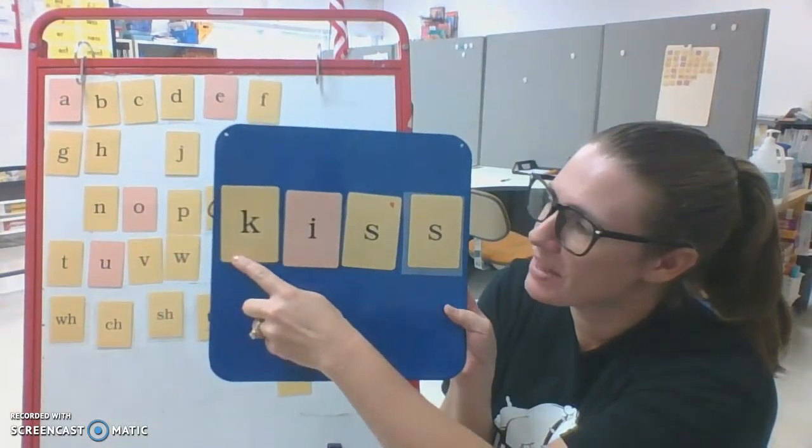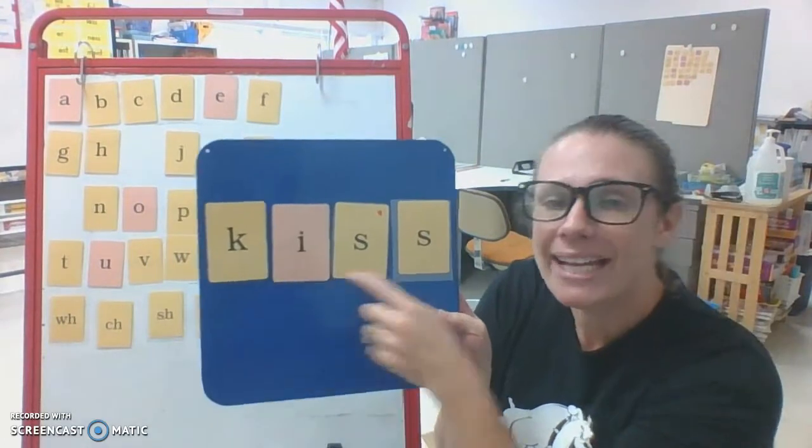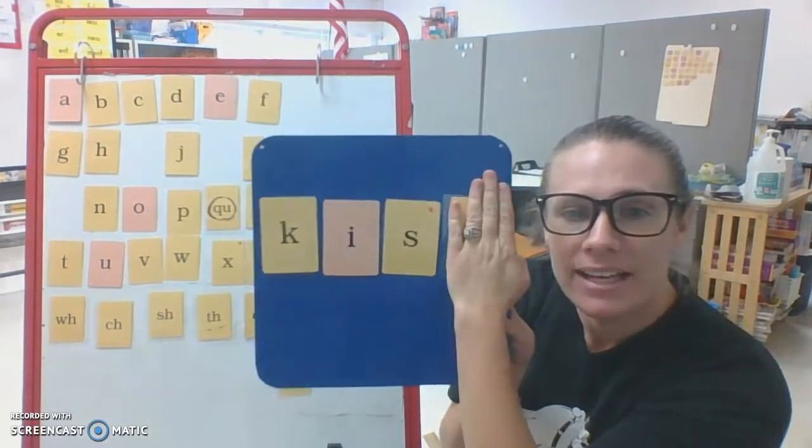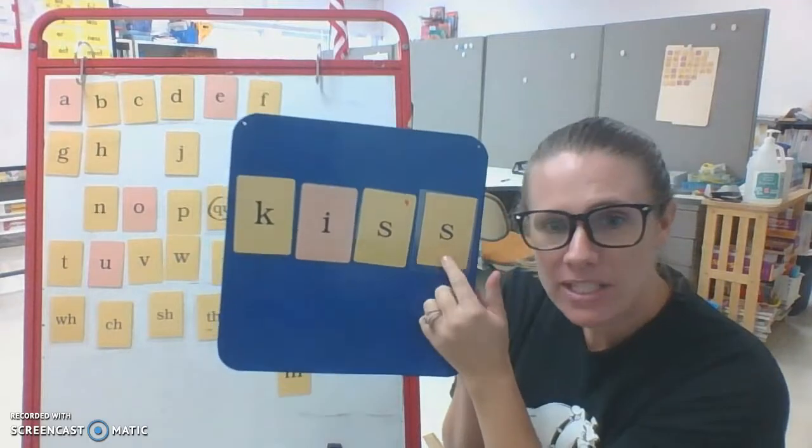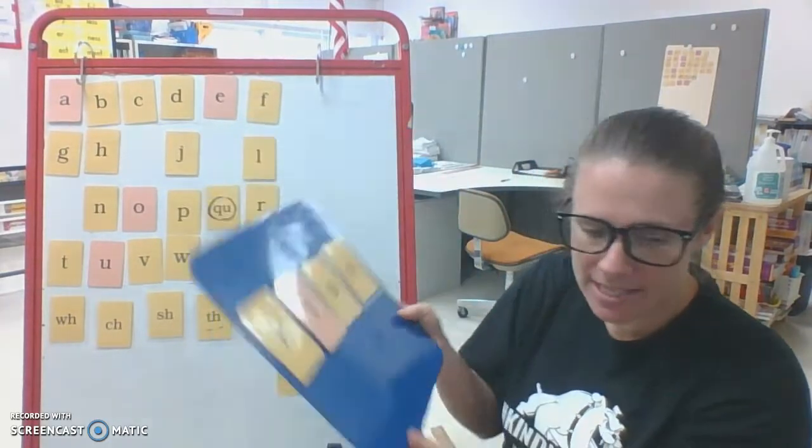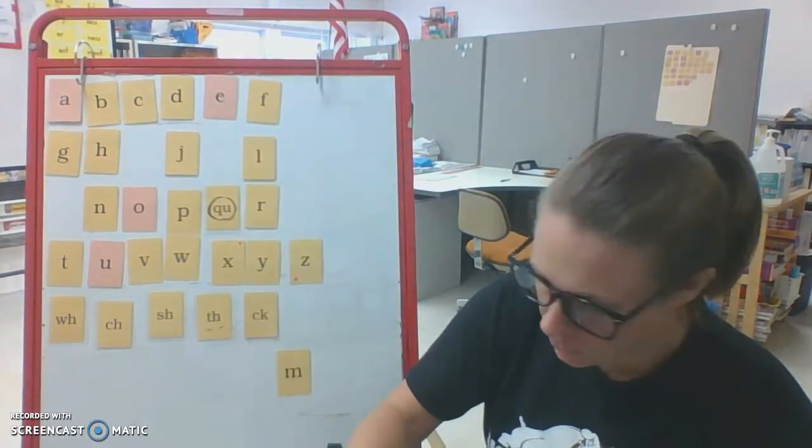What's this word say? C, I, S, kiss. Yeah. The S comes after the short vowel, so we double it. We have to do two S's. Let me show you another one.